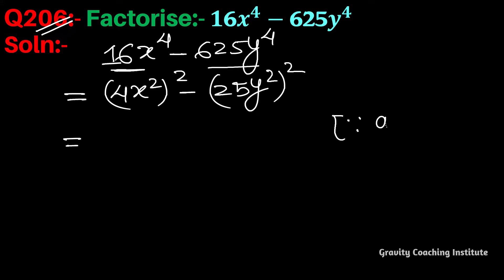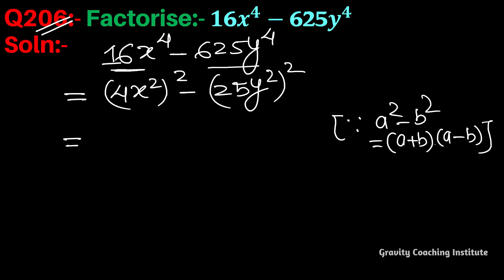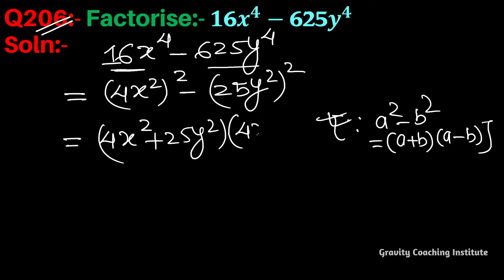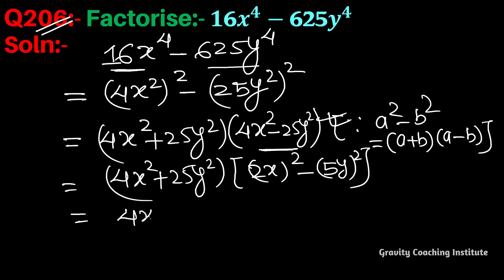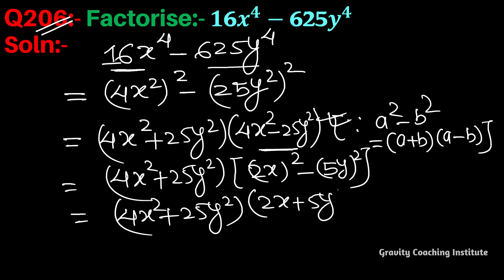We use the identity a² minus b² equals (a + b)(a − b). Applying this, we get (4x² + 25y²)(4x² − 25y²). We can apply the identity again to (4x² − 25y²), giving the final answer: (4x² + 25y²)(2x + 5y)(2x − 5y).